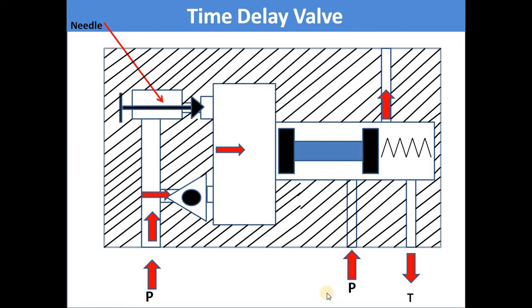When the spool is at this position, the medium comes from the P port but doesn't go towards the A port. This is the actuator port. But when sufficient pressure builds in the air reservoir, the spool shifts towards the right side, and then the P port is connected to the A port.